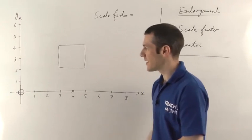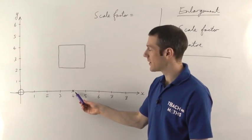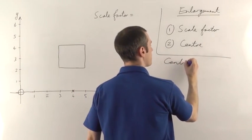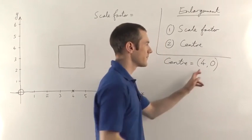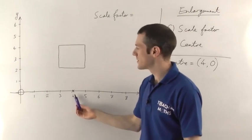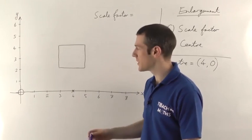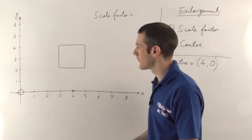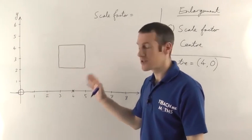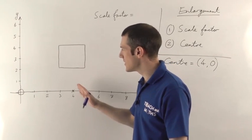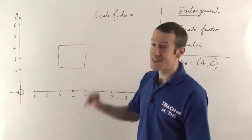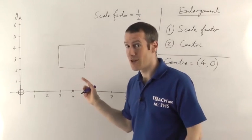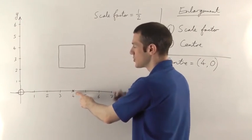I've got a square now, and this time I'm choosing the centre of enlargement to be the point (4, 0). That's 4 in the x direction and nothing in the y direction — so we go 4 to the right and don't go up or down. If they give you a centre that's not the origin, they'll usually tell you what the centre is as a coordinate; you find it on your axes and mark it. You can't do the thing about multiplying the coordinates here — it's not going to work. The scale factor this time is going to be a half, so we're going to make the square get smaller. Step 1: from the centre of enlargement, draw a straight line through each corner of the shape.